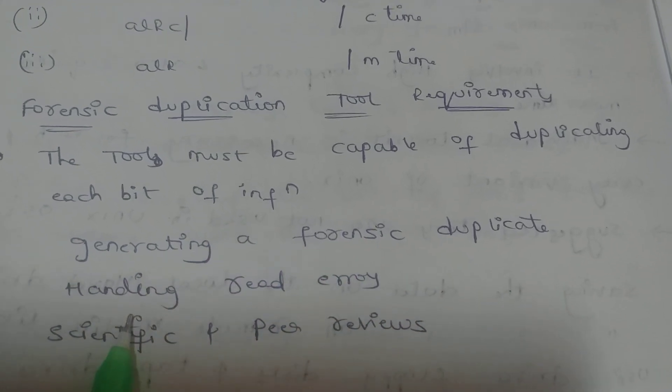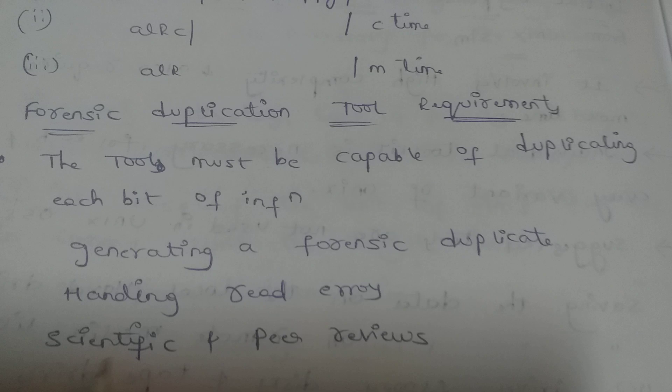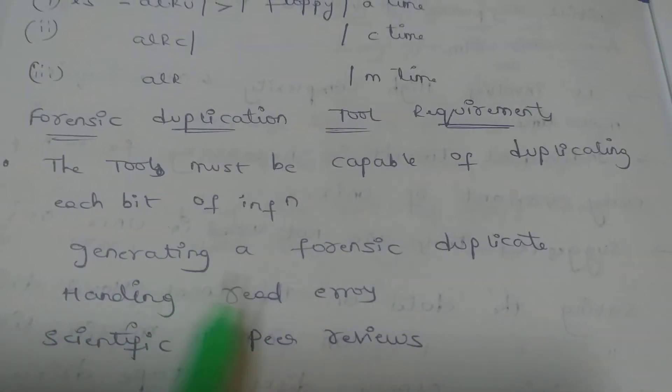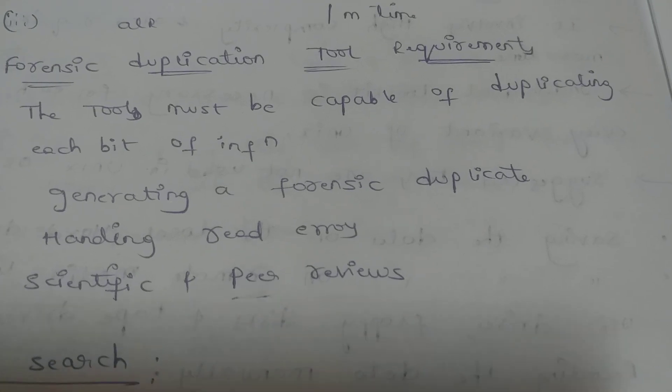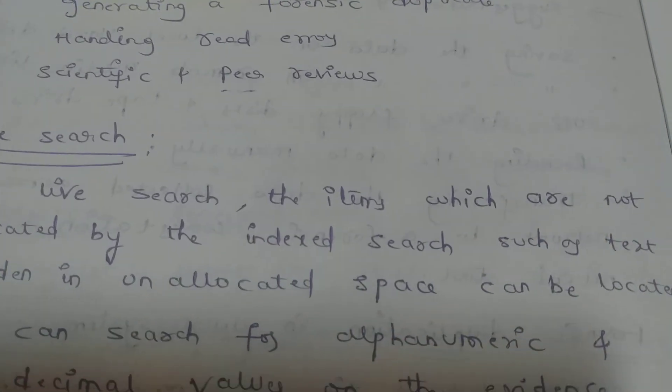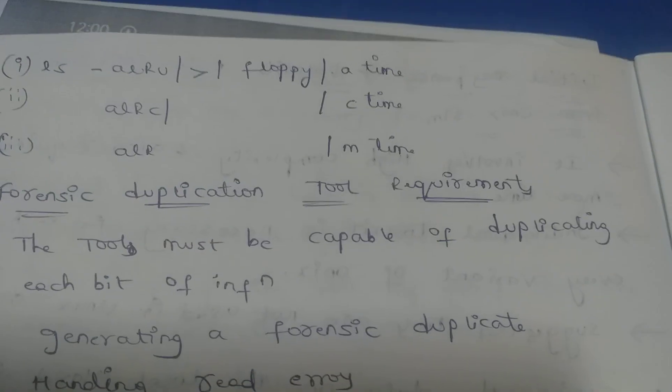Handling read errors, scientific and peer reviews. Peer means client-server reviews. This is all about forensic duplication tool requirements.